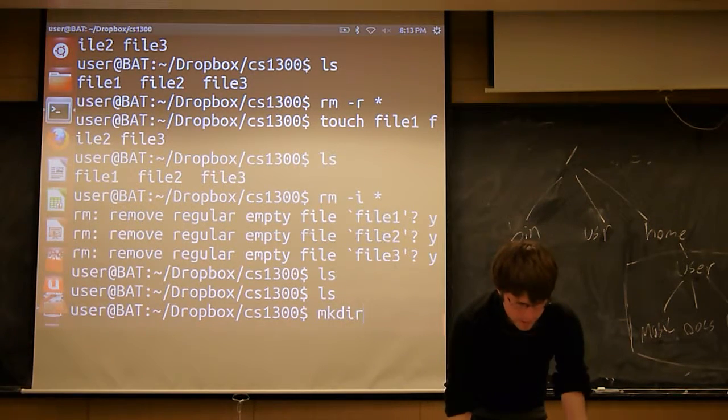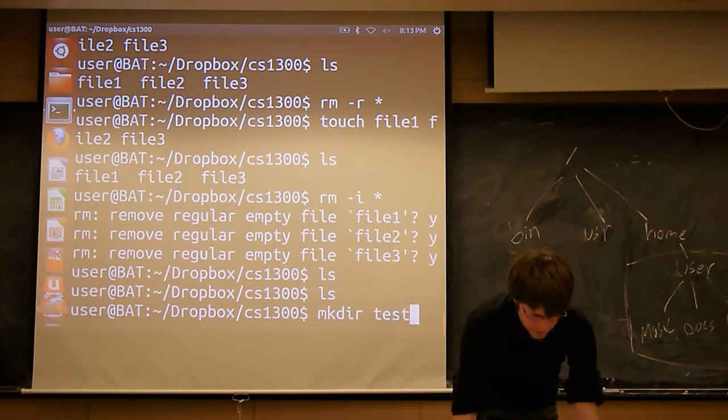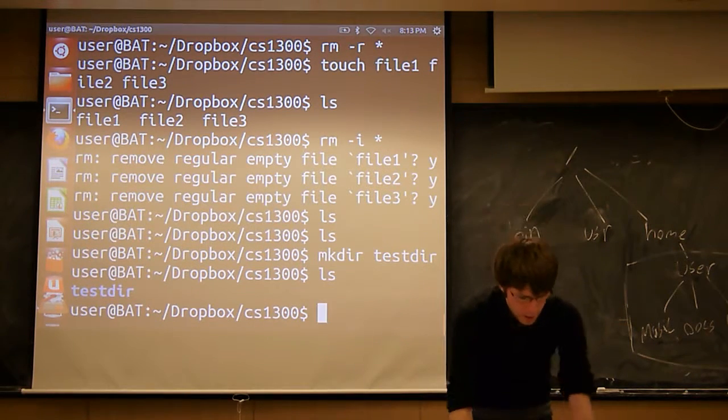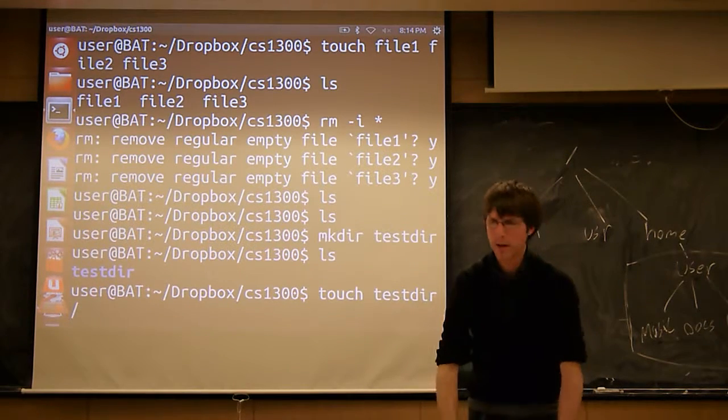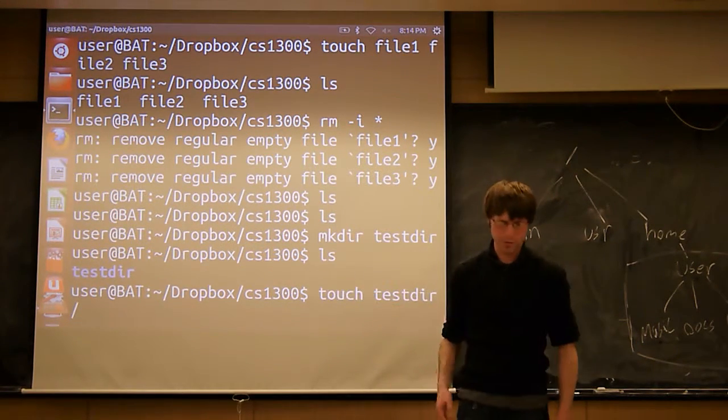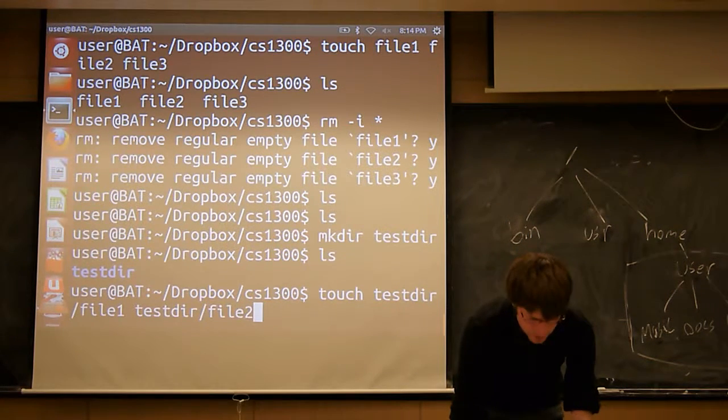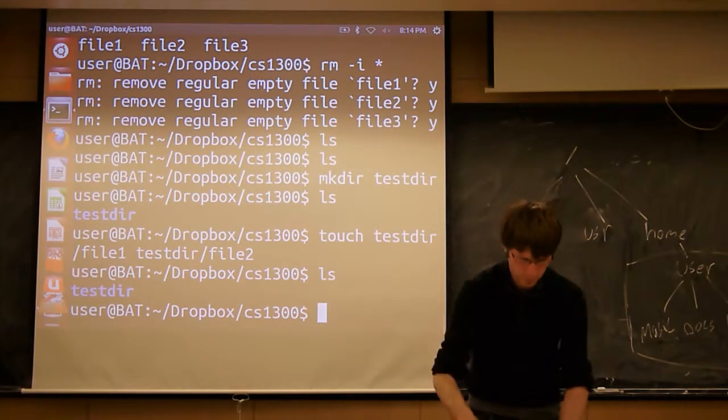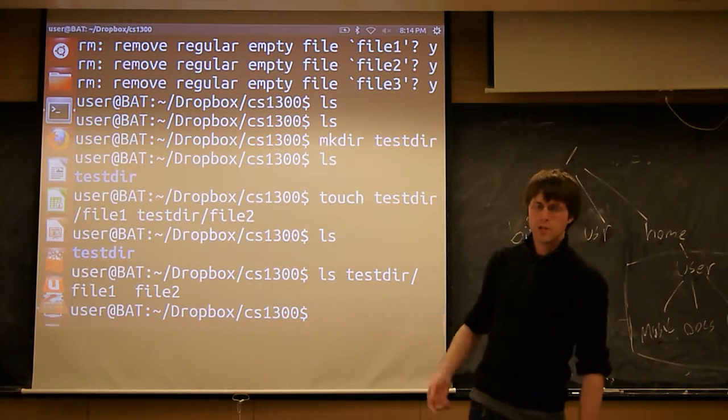Let's look at some of the details. So I'm going to make another directory inside my CS1300. I'm just going to call it test directory. I now have a directory called test directory. I'm going to create a couple of files inside there, and I'm not even going to bother cd-ing into it. I'm just going to do test directory, then the name of the file. So I'm going to do file 1, then test directory, file 2. There's still only a directory in my current folder. But if I do ls test directory, there's two files inside of there.